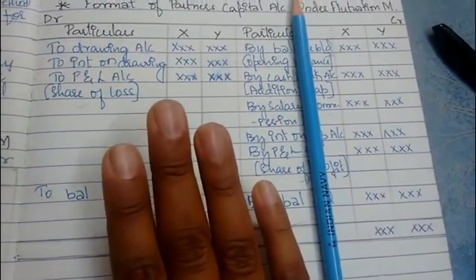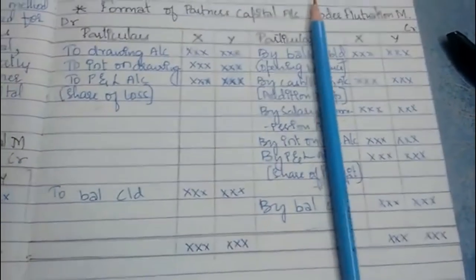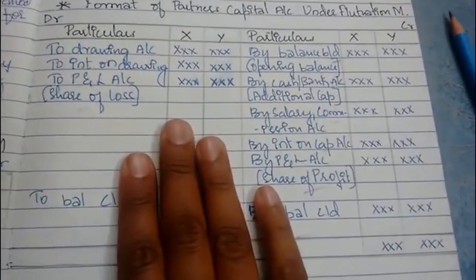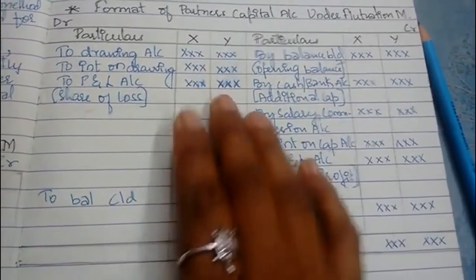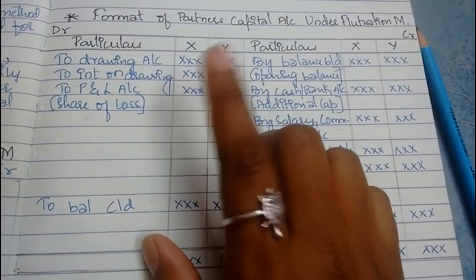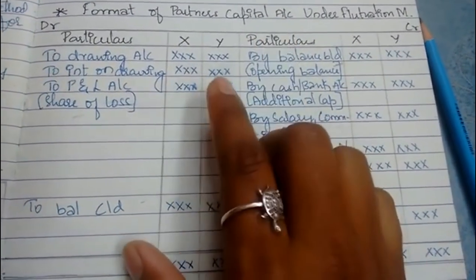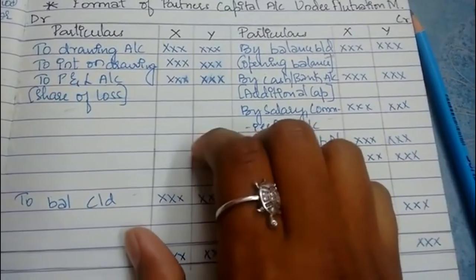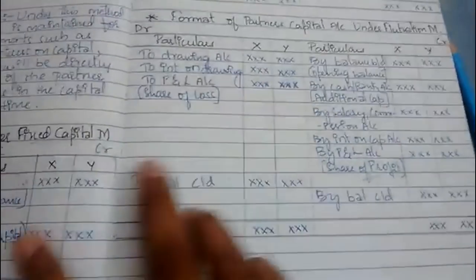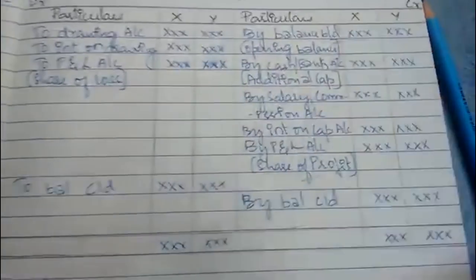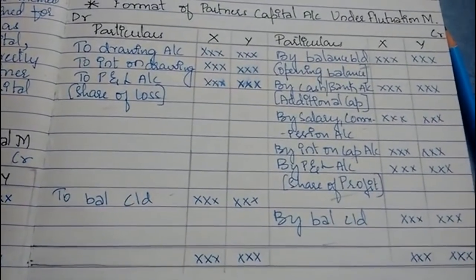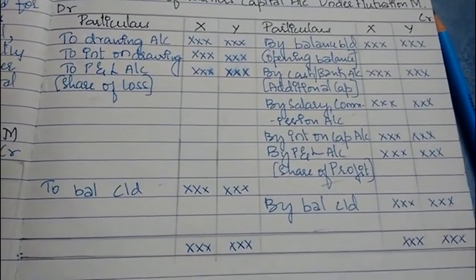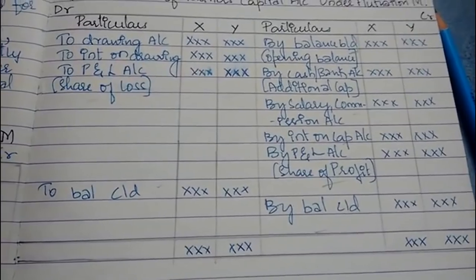Hope you understood the format. This is the theory part covering the methods of partner's capital account. After studying these methods, we will prepare the P&L appropriation account and then the partner's capital account. In the next video, we will move on to the interest on drawings calculation. Thank you.